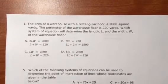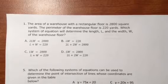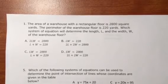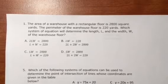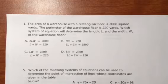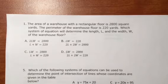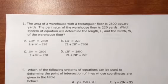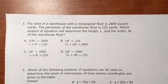Here we have: the area of a warehouse with the rectangular floor is 2800 square yards. The perimeter of the warehouse floor is 220 yards.